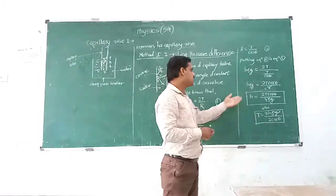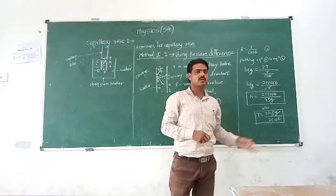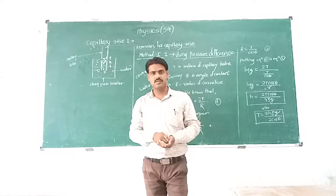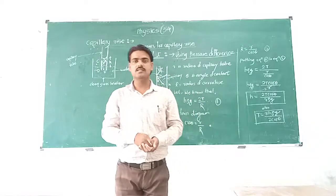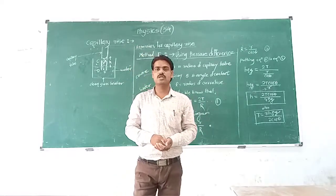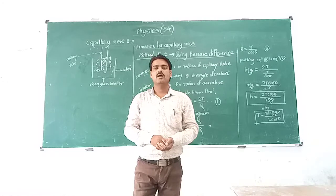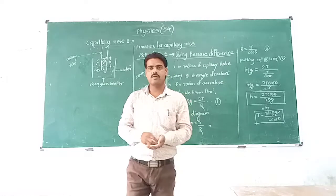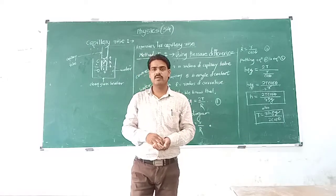From this formula we can also write the formula for surface tension T: T = r·H·ρ·g / (2·cos θ). Both formulas H = 2T·cos θ / (r·ρ·g) and T = r·H·ρ·g / (2·cos θ) are very important for solving numerical problems.